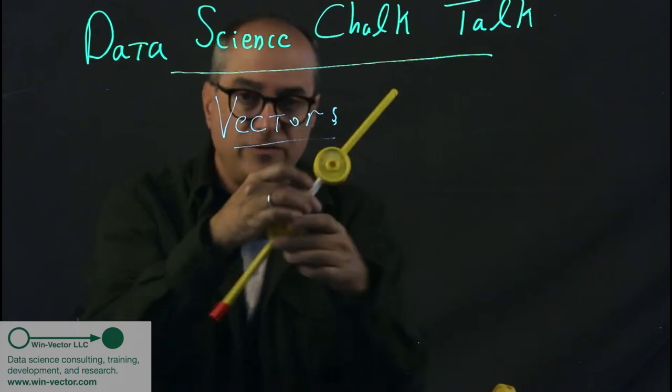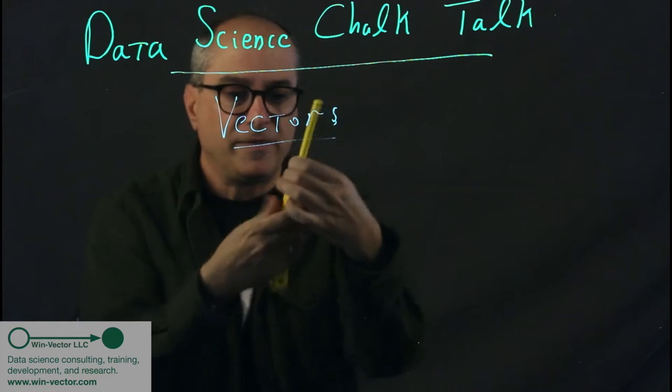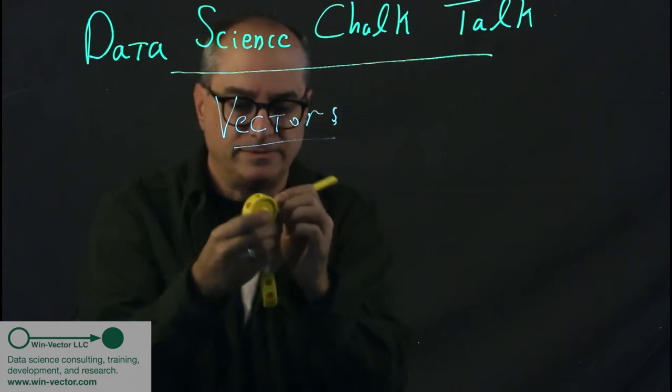Now vertical is no longer available to use, so we'll use depth into the board. Similar for this vector, we'll use the same scheme: horizontal, then vertical, then depth.